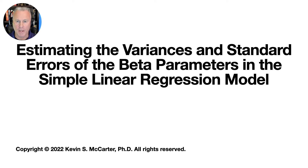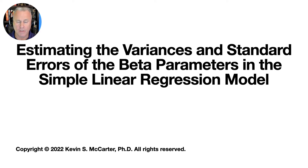In the previous lecture video, we saw how to estimate the variance of the error term in the simple linear regression model. In this lecture, we're going to see how to use that estimator to obtain estimators of the variances and standard errors of the least squares estimators of the beta parameters.